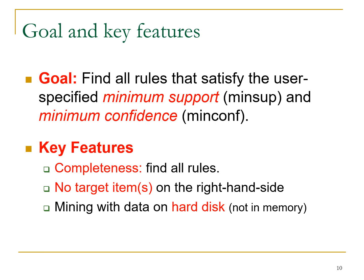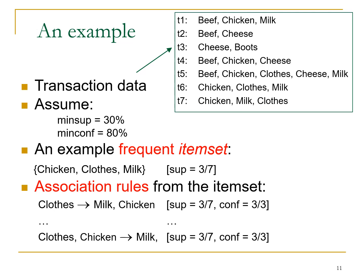The main goal is to find all rules satisfying a user-specified minimum support and minimum confidence threshold. When all such rules are found, we achieve completeness — no target item on the right-hand side is missed. This is one of the best aspects when implementing association rule mining with data on disk rather than in memory.